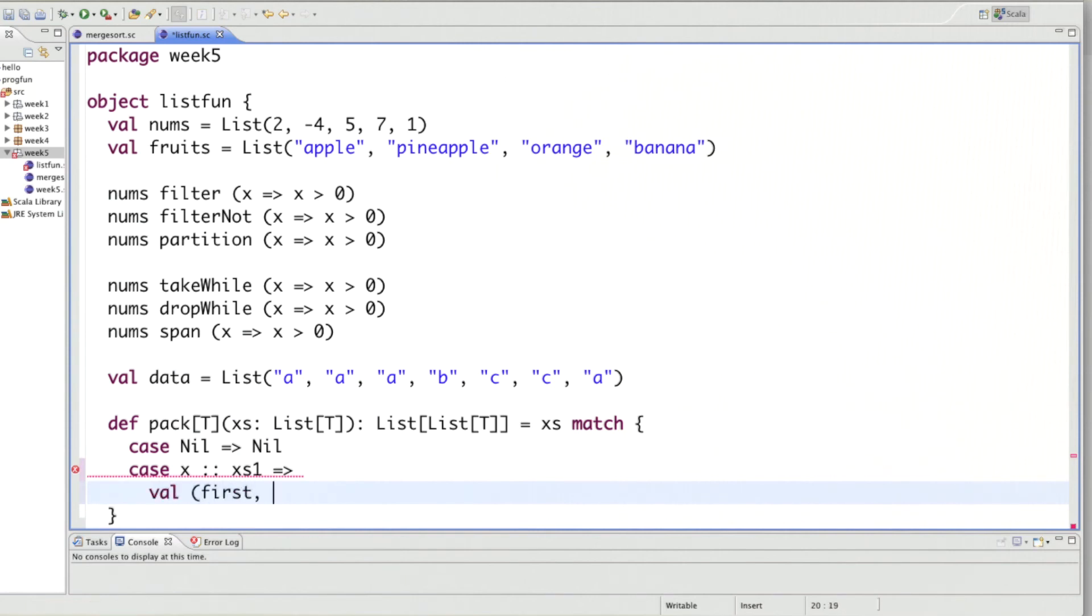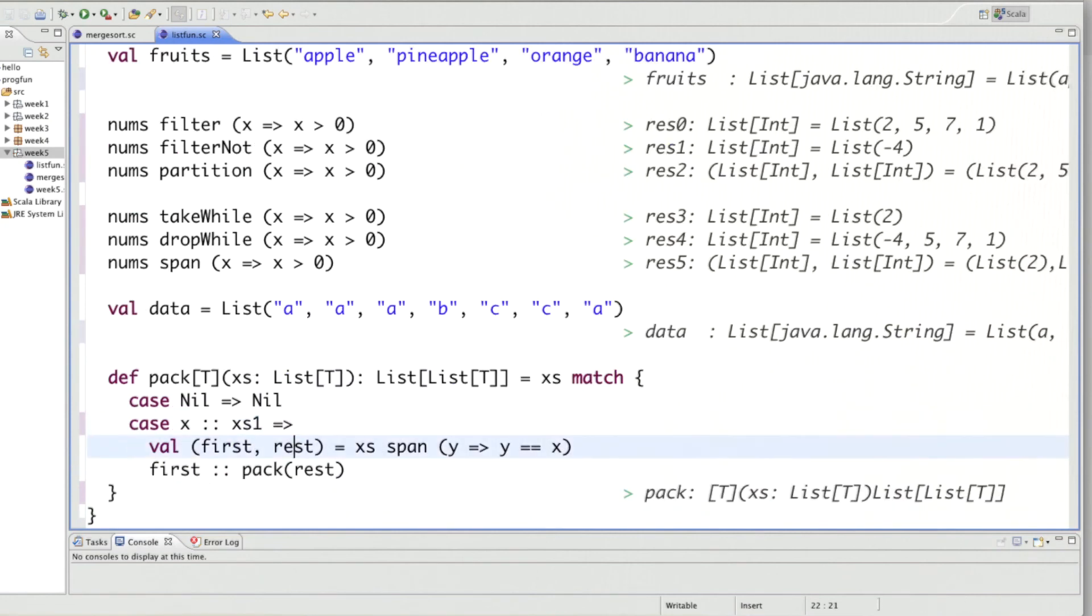So let's set up a pattern match first rest equals XS span. And what should the predicate be? Well, we say take elements as long as they are equal to X, the leading element of the list. Once we have that, we would say first is already the sub list that will constitute the first element of our list and the other elements would be the result of a recursive call of pack to the rest of the list.